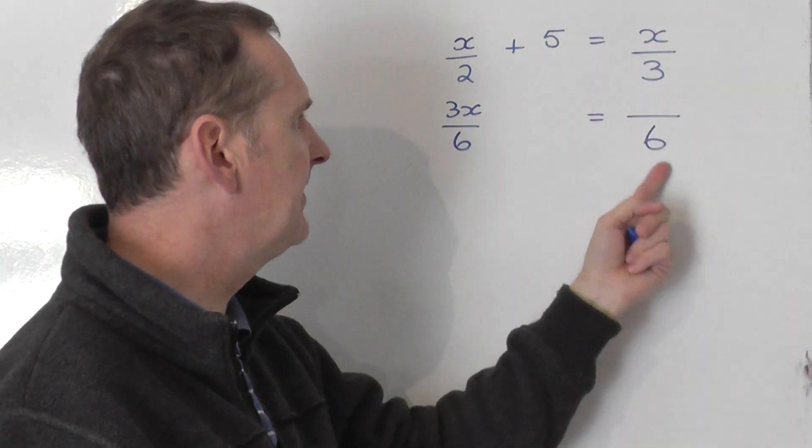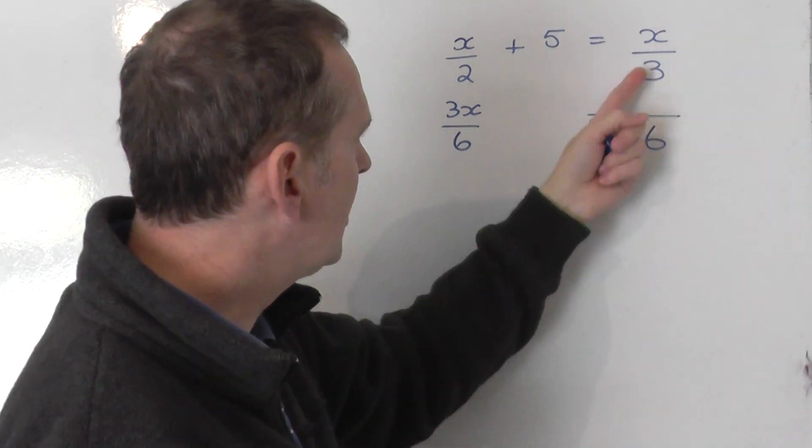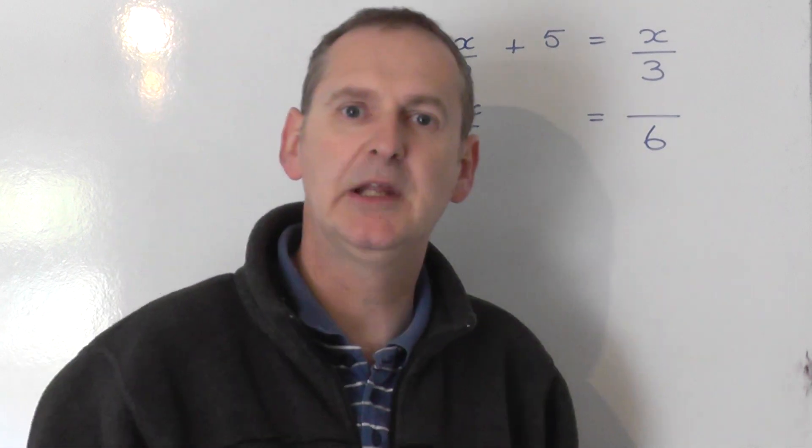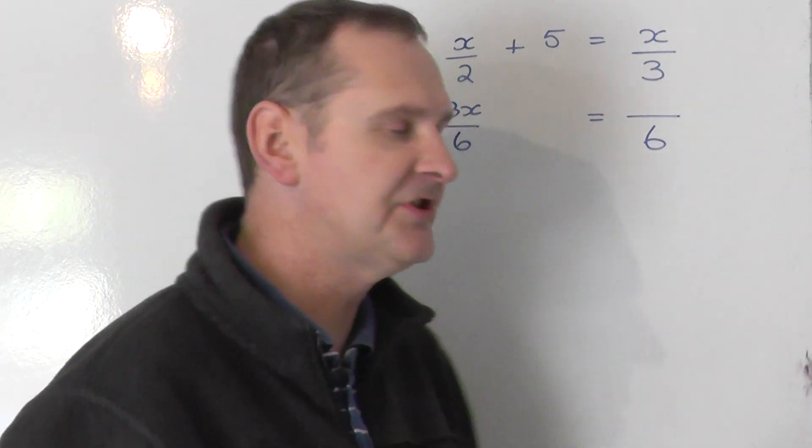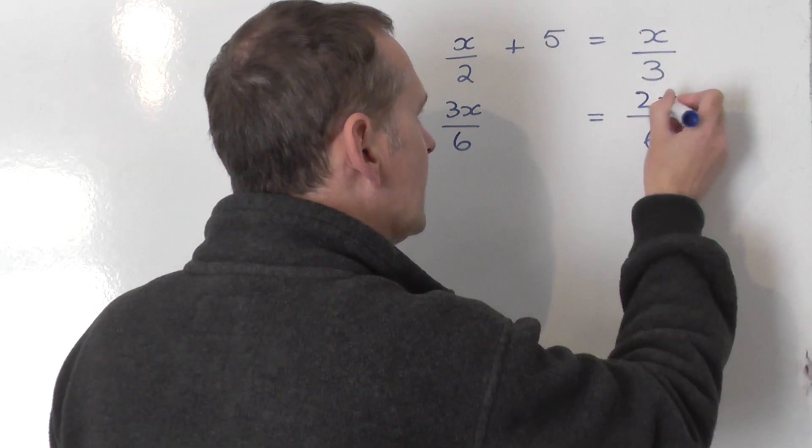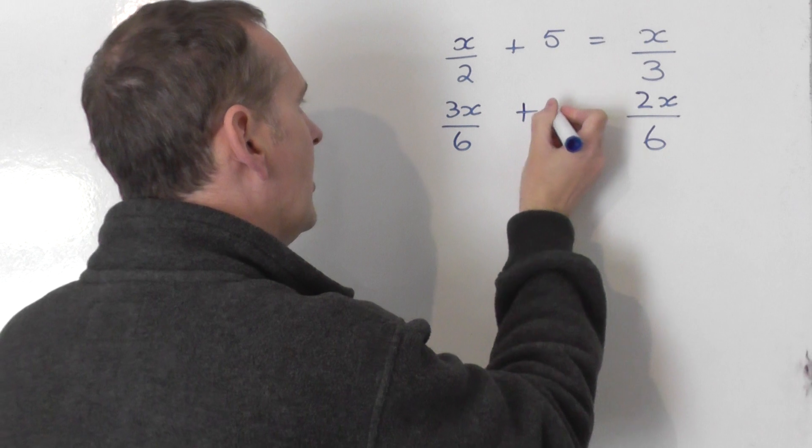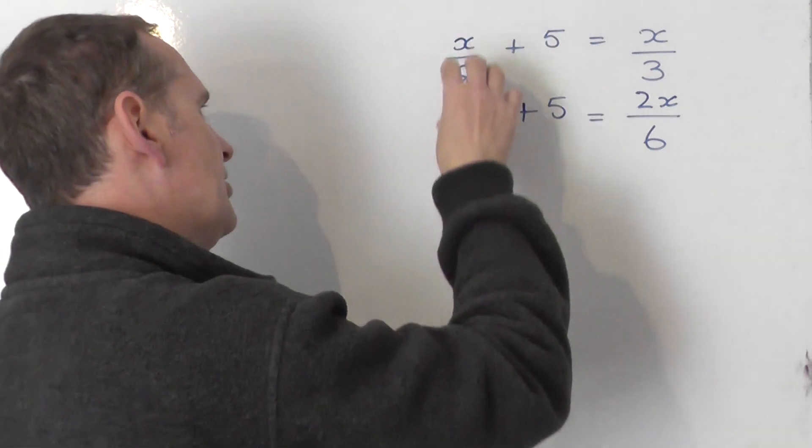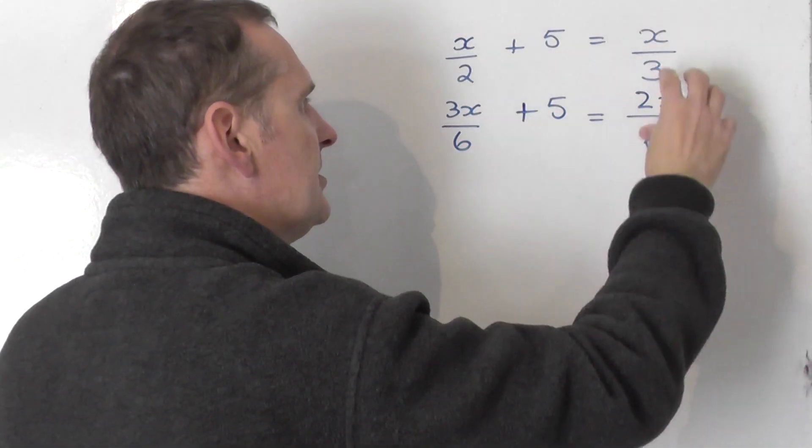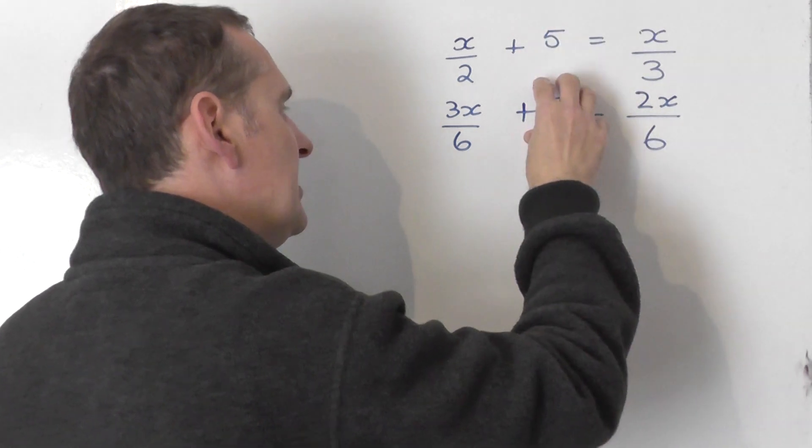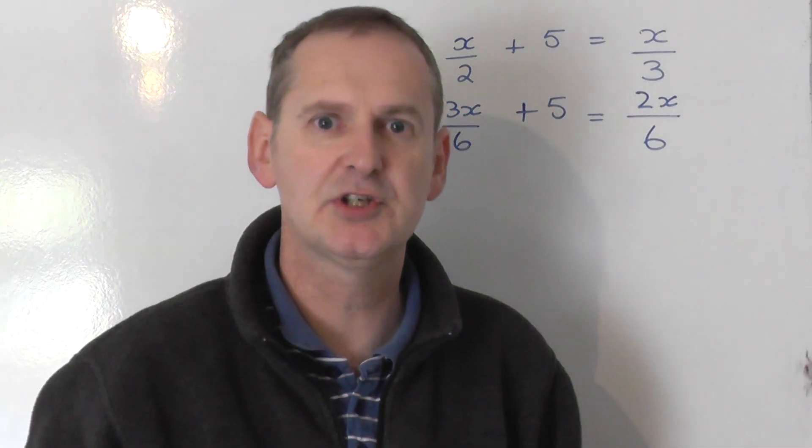I'm going to do the same thing for this fraction over here. I'm going to change the 3 into the 6 by doubling it. So to keep the fraction the same, I must double the top number. So the x becomes 2x. And I'm going to leave the plus 5 unchanged. So that fraction is the same as that, that fraction is the same as that, and that stays exactly the same. You don't touch that plus 5.